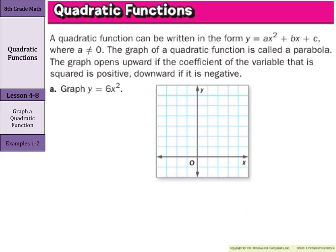A quadratic function can be written in the form y equals ax squared plus bx plus c, where a is not equal to 0. The graph of a quadratic function is called a parabola. The graph opens upward if the coefficient of the squared variable is positive, and downward if it's negative. So in y equals 6x squared, the coefficient is 6, and since it's positive, we can expect this graph to open upward.